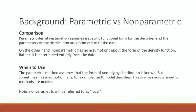Parametric density estimation assumes a specific fundamental form for the densities, and the parameters of the distribution are optimized to fit the data. Nonparametric, on the other hand, has no assumptions about the form of the density function and is entirely determined from the data. The parametric method assumes that the form of the underlying distribution is known, but sometimes this assumption fails — an example of this is multimodal densities. When this assumption fails, that's when we need nonparametric methods.